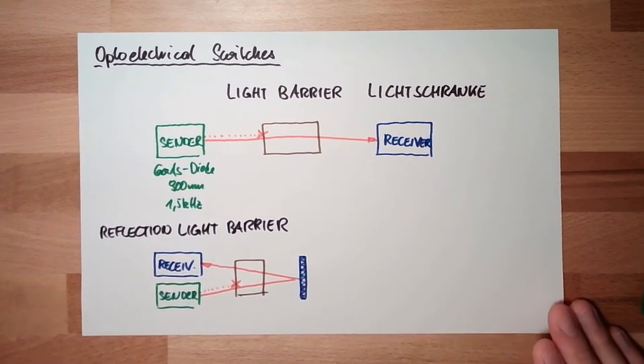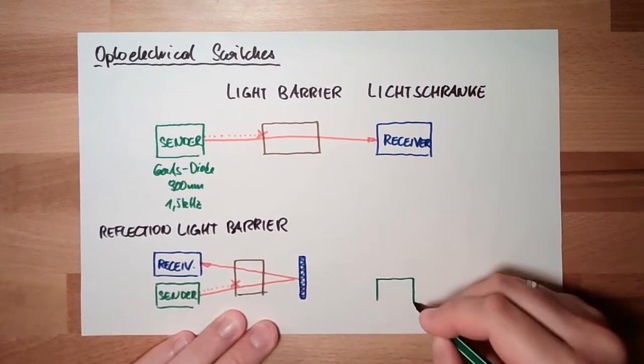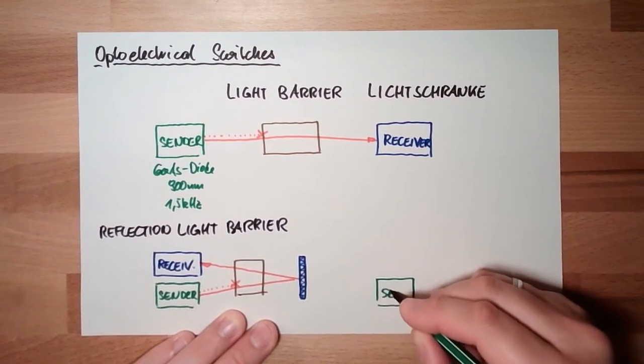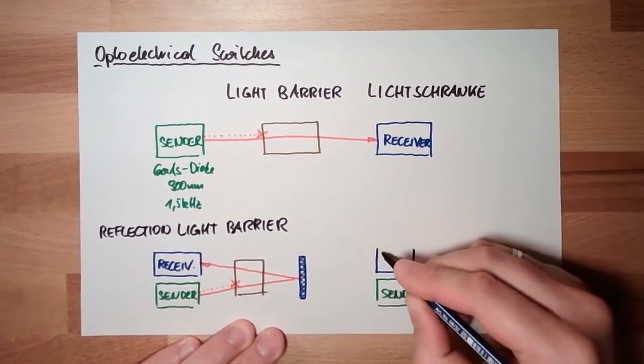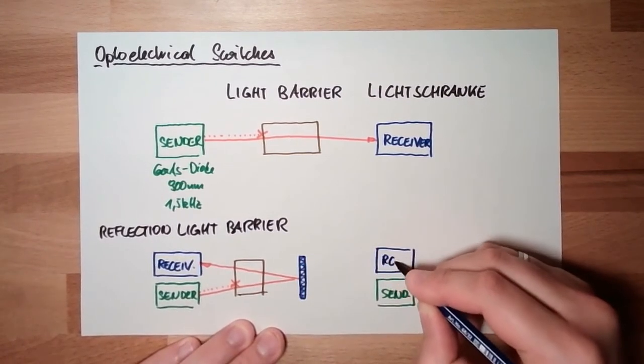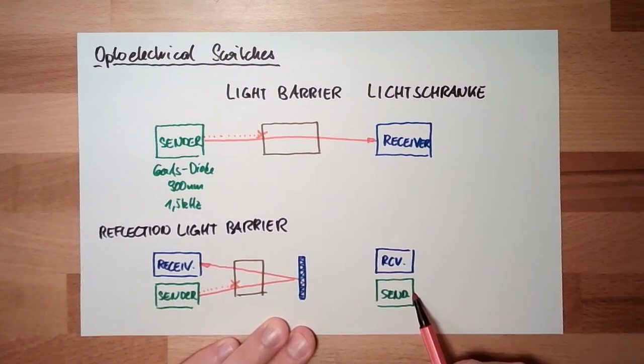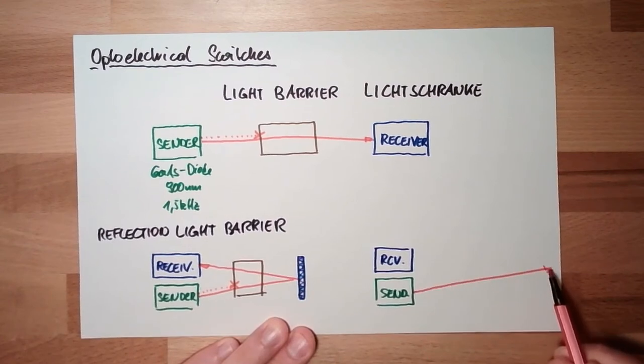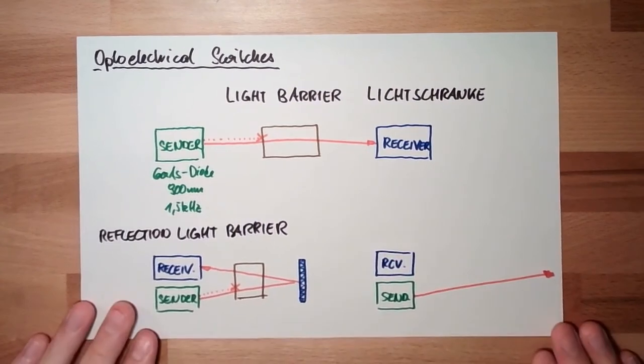And then, there would be the possibility to have a sender. And again, we have the receiver at the same side. The light of the sensor is going out. The receiver does not see the light.